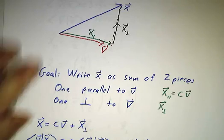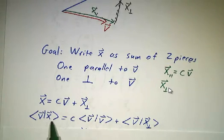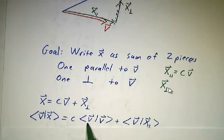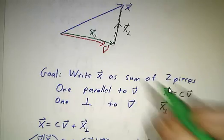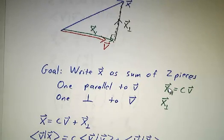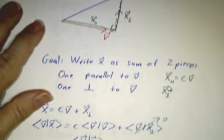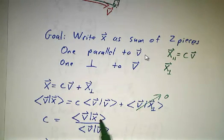And then we take the inner product of v with both sides. So the inner product of v with x is c times the inner product of v with v plus the inner product of v with x-perp. But x-perp by construction is perpendicular to v, so the inner product of v with x-perp is 0. And we're left with c being the inner product of v with x divided by the inner product of v with v.